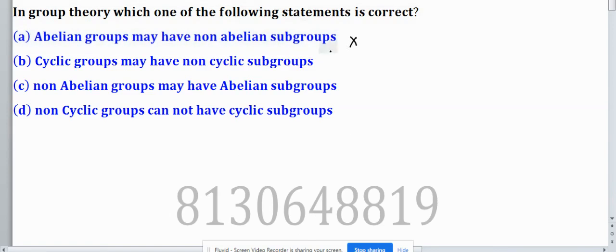Now come to the second statement. Cyclic groups may have non-cyclic subgroups. Cyclic groups have subgroups. It means that the identity element will be the same and the identity element will generate the whole subgroup. So it will be cyclic. Again, this statement is wrong.